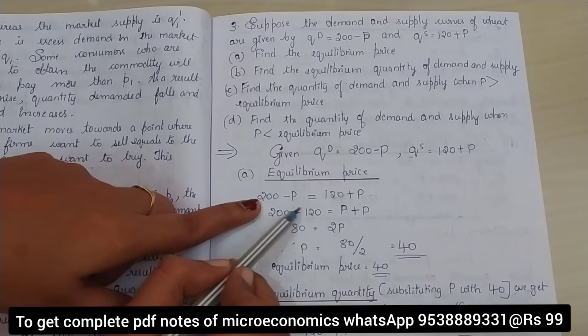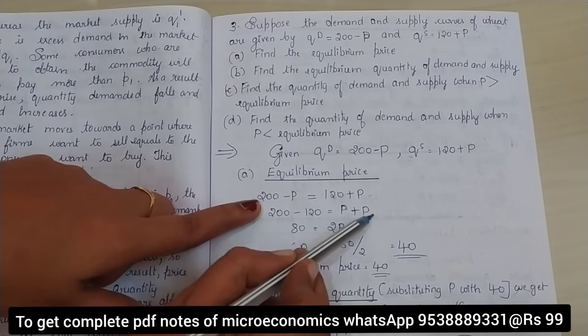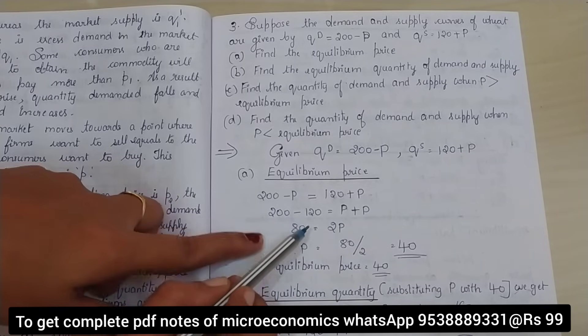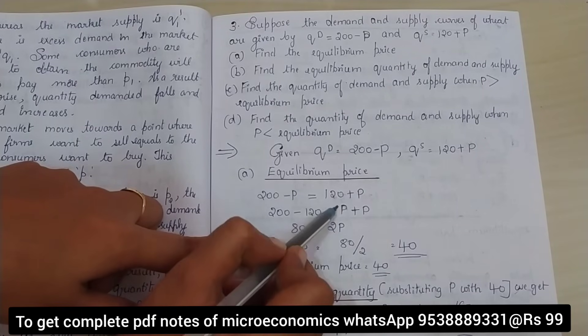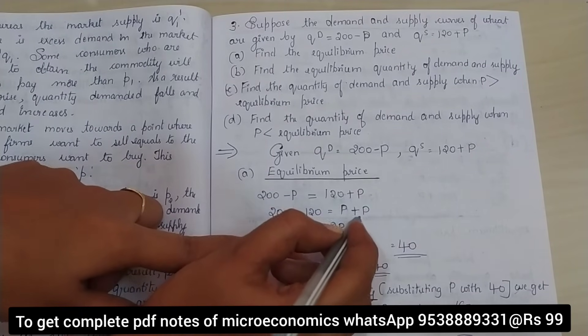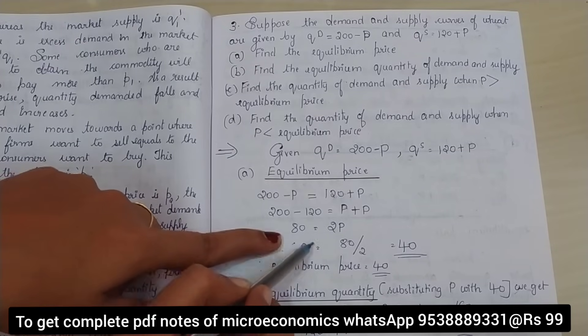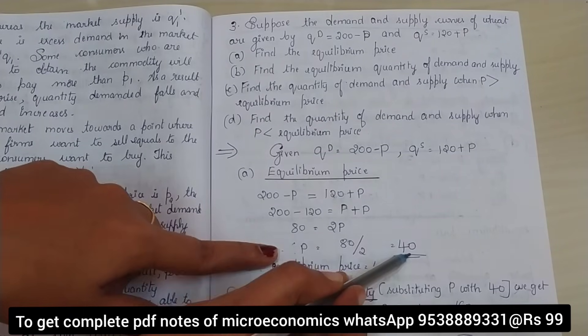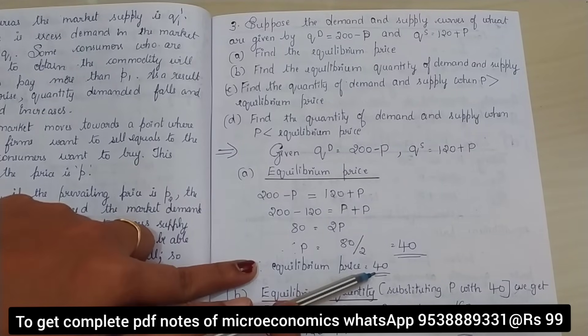So 200 minus 120 is equal to P plus P. Minus P goes to the other side and becomes plus P. 200 minus 120 is 80, which is equal to 2P. Therefore, P is equal to 80 divided by 2. Answer is 40. So this is our equilibrium price.